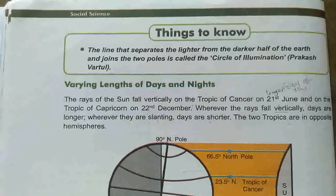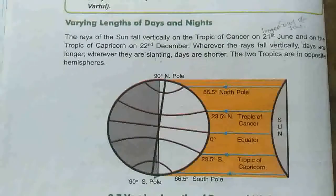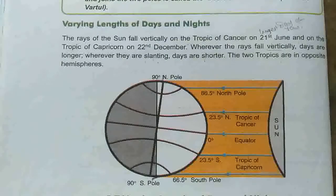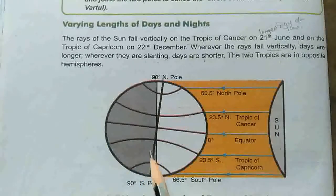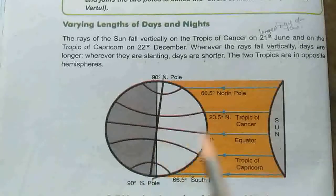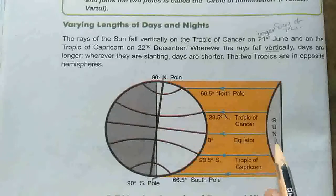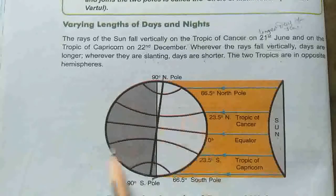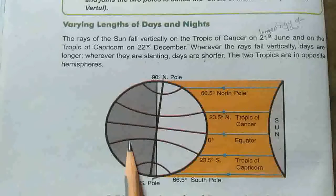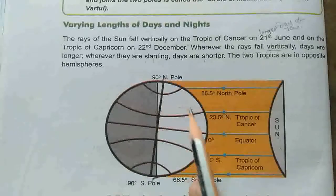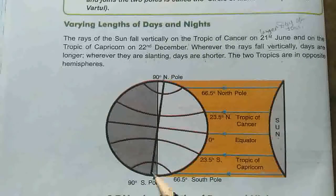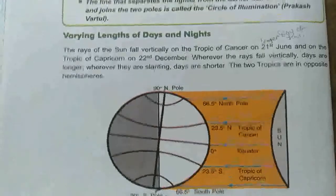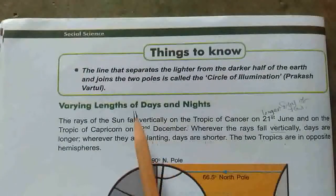Students, here a diagram is given which gives more information about it. You have to look at it like that. Here is the sun and this is the earth. You see that the earth moves on its axis. Whichever part comes toward the sun side, that is day. And the opposite side is darkness. When it moves, this is the circle of illumination. The circle of illumination is explained here.